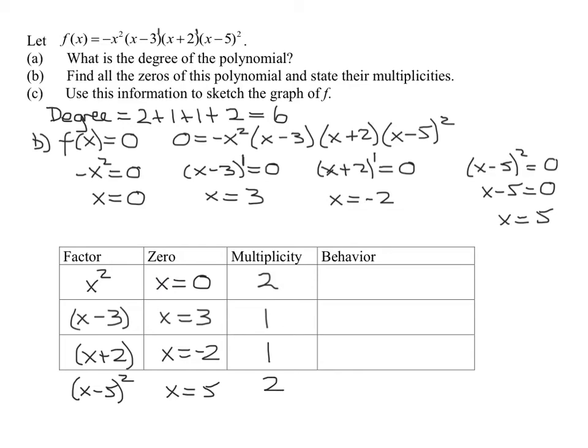And so now I've found all the zeros and the multiplicity. And a nice check is if you add up all the multiplicities, you should get the degree of the equation. And 2 plus 1 plus 1 plus 2 equals 6. So I've found part b. I've found all the zeros and I've stated their multiplicity.